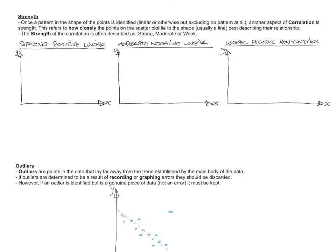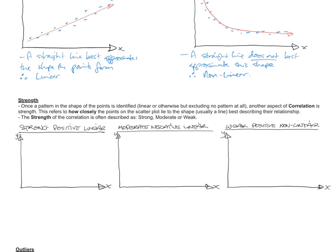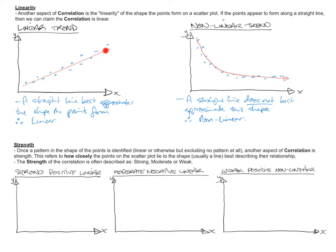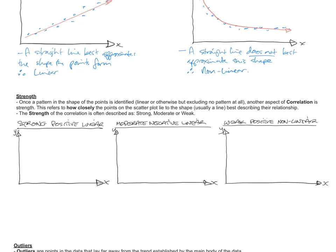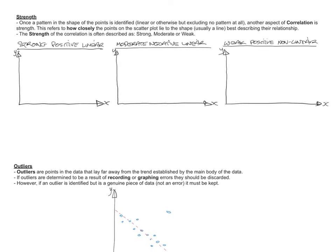Strength is another aspect of correlation. Once a pattern in the shape of the points is identified, so we talked about linear or non-linear patterns. But this has nothing to do with when there's no pattern at all. That's just no correlation in the first place, so you don't need to go beyond that. They're just randomly associated, so there's no point in talking about strength or anything there. But if you have a clear pattern like a line or a curve, one other aspect of correlation is the strength of the correlation. And that refers to how closely the points on the scatter plot lie to that shape.